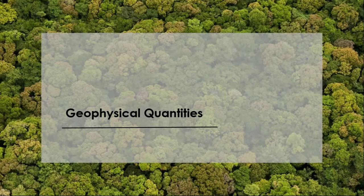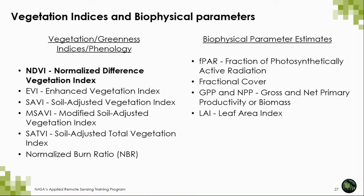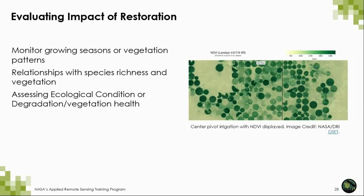The geophysical quantities that Earth observation can produce include vegetation indices and biophysical parameters. Vegetation indices are generally calculated as a ratio of reflectance values from different portions of the electromagnetic spectrum, along with some biophysical characteristics. Other parameters require ground-based data in conjunction with remote sensing data to generate land cover maps. These quantities and data products can be used to evaluate impacts of restoration and determine future actions — monitoring growing seasons, vegetation patterns, relationships with species richness, and assessing ecological condition, degradation, or vegetation health.